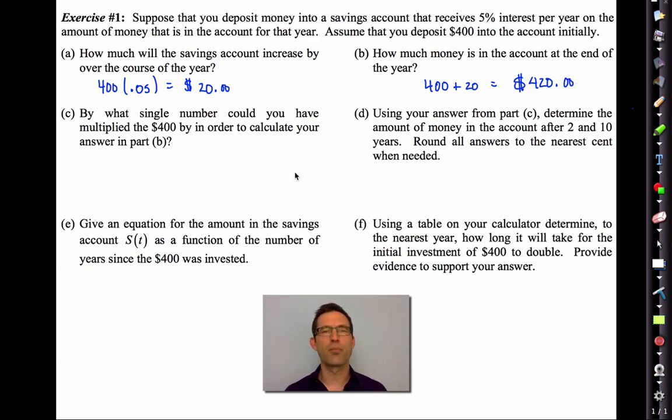Now, letter C is the real important part, perhaps the most important part of the entire lesson. By what single number could you have multiplied the 400 by in order to calculate your answer in part B? Pause the video. You might remember this, but let me just explain again. I want to go from the 400 to the 420 in a single calculation as opposed to two calculations.